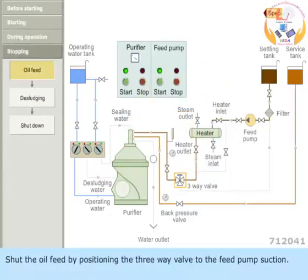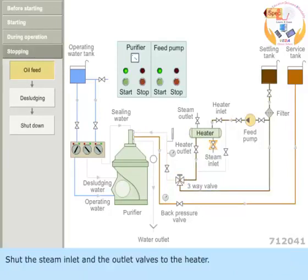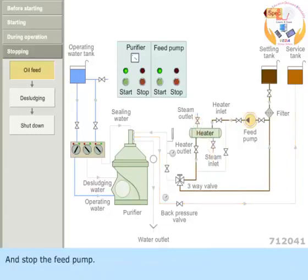Shut the oil feed by positioning the three-way valve to the feed pump suction. Shut the steam inlet and the outlet valves to the heater. And stop the feed pump.